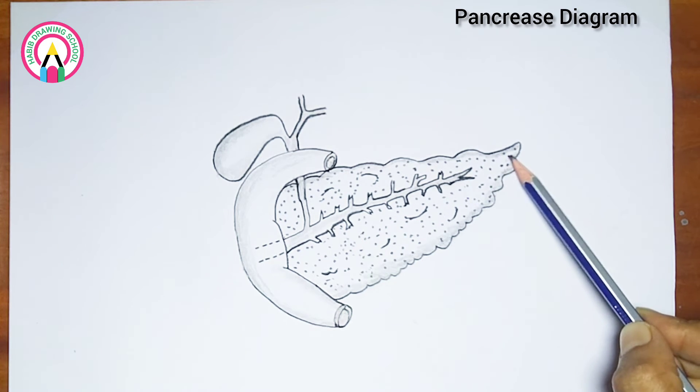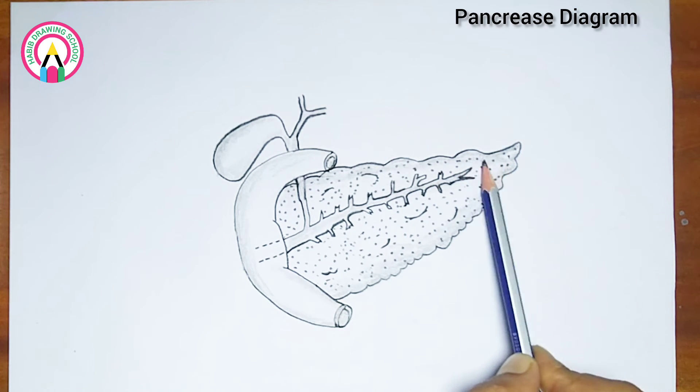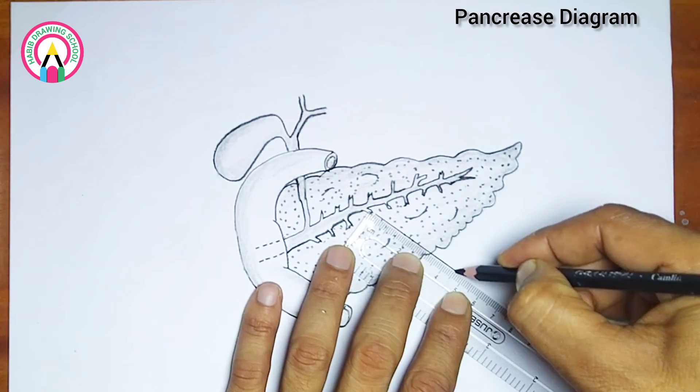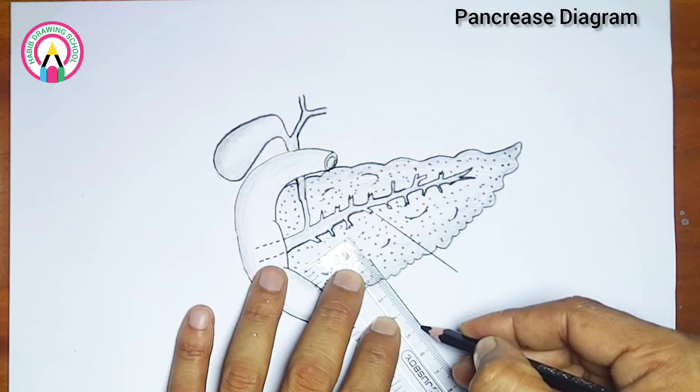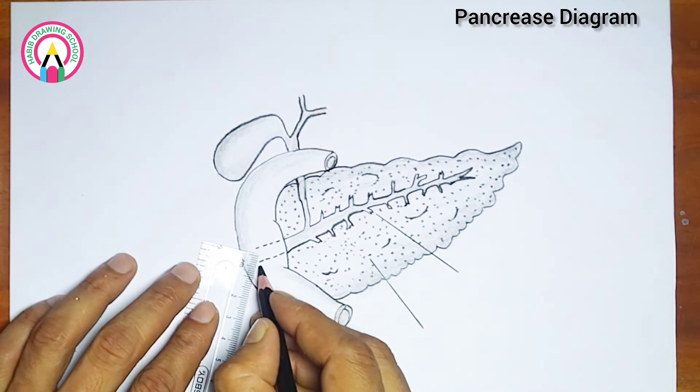Two: acinar cells - these are the cells in the pancreas responsible for producing and secreting digestive enzymes. These enzymes are released into ducts that eventually empty into the small intestine where they aid in the digestion of food.